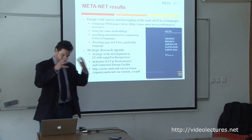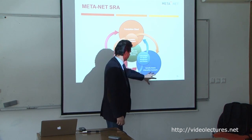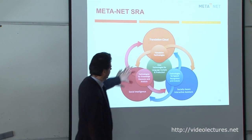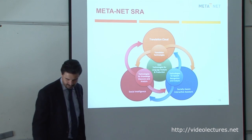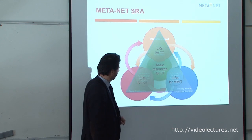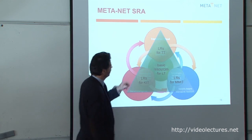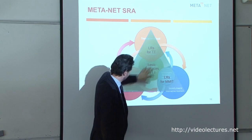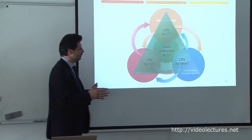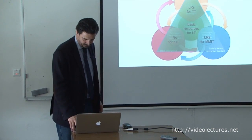The strategic vision considered a triangle of activities: socially aware interactive assistance, social intelligence, translation facilities like a translation cloud, and how these three points could be connected. We identified the need for language resources for knowledge and information technology, for multimedia information technologies, and for translation technologies. At the center are basic language technology resources — corpora, digital lexicons — that need to be more organized, not just a bunch of digital text put together.